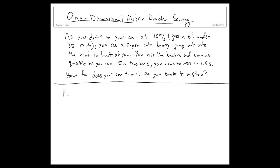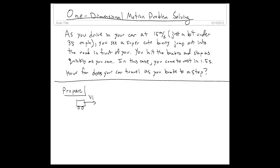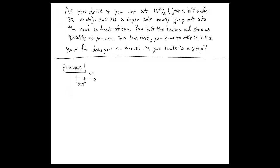As with any problem like this, we're going to prepare by drawing a picture. We draw our car, initially moving at some initial speed. We choose it moving to the right since the right is the positive direction and we like positive numbers. The road will be our x-axis, measured in meters. And at some point there is a bunny — our cute little bunny that jumps into the road. We're not told where the bunny is, so we just put it at some point and hope we don't hit it.